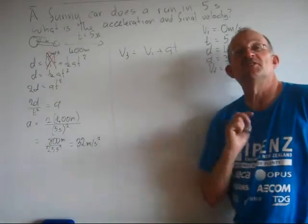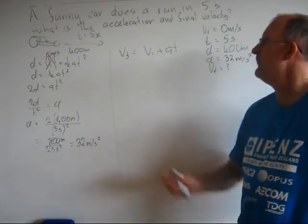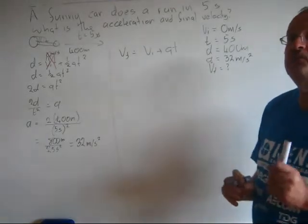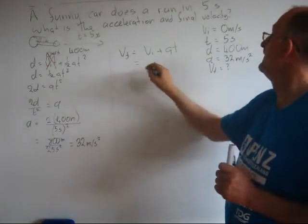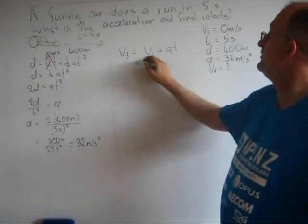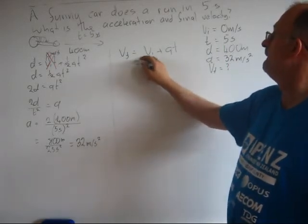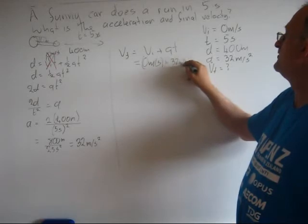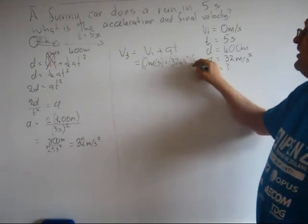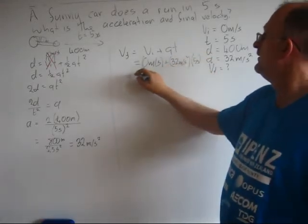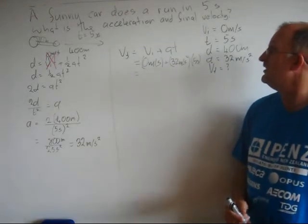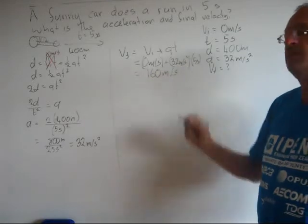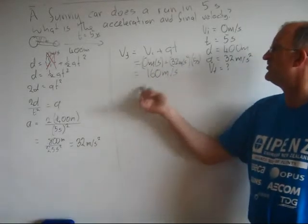That's what I want to find, so that's done. Step 5: Put in numbers. Vf is equal to 0 meters per second plus 32 meters per second squared times 5 seconds equals 160 meters per second. That's the solve. Use the calculator.